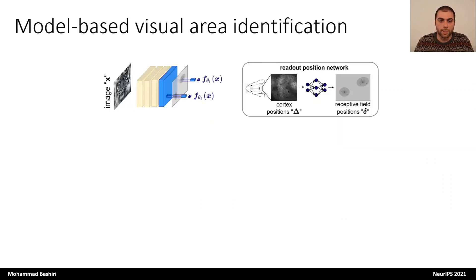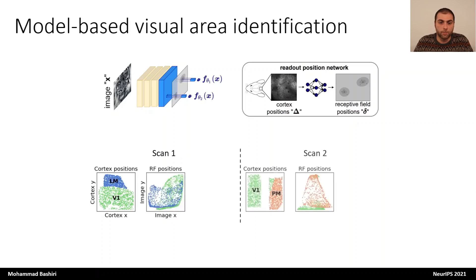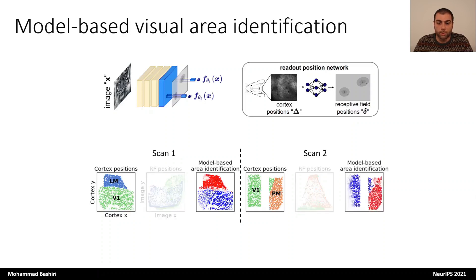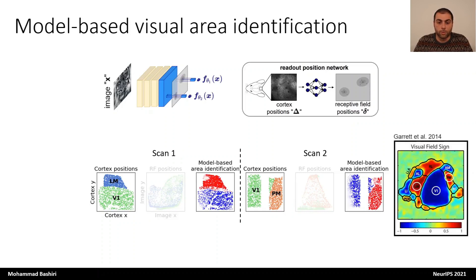I want to start by showing how the mapping function can be a useful tool. Here we have the cortical positions from the data and the receptive field positions learned by the model. Because we know the mapping from cortical positions to receptive field positions, we can detect mirrored visual field representation simply by looking at the determinant of the Jacobian of the mapping function. Areas with mirrored visual field representation would have a negative determinant shown in blue, and areas with non-mirrored representation would have a positive determinant shown in red. This allows the model to identify distinct visual areas only from responses to natural images, and the areas identified closely match the ones identified experimentally, including the mirrored or non-mirrored representation.